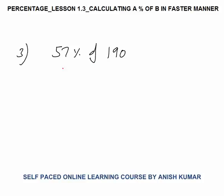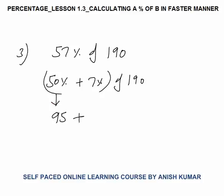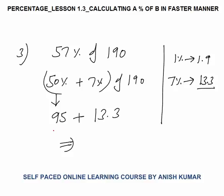Now 57 percent of 190 — you can break this as 50 percent plus 7 percent of 190. Now 50 percent means half, and half of 190 would be 95. This calculation must be fast. Now 7 percent: 1 percent of 190 is 1.9, so 7 percent would be 7 times 1.9. You should know the table of 19 — 19 sevens are 133, so 1.9 into 7 would be 13.3. This you must be able to solve verbally. Now you have to add verbally: 95 plus 13.3 — 95 plus 3 is 98, plus 10 is 108, and 0.3 will be as it is. So the answer will be 108.3.